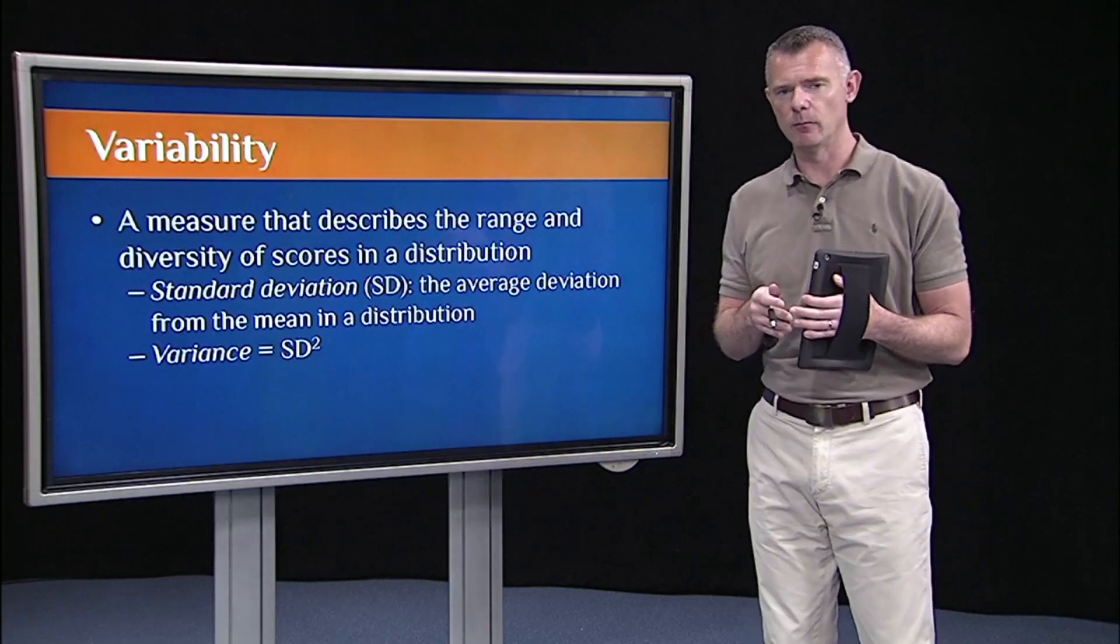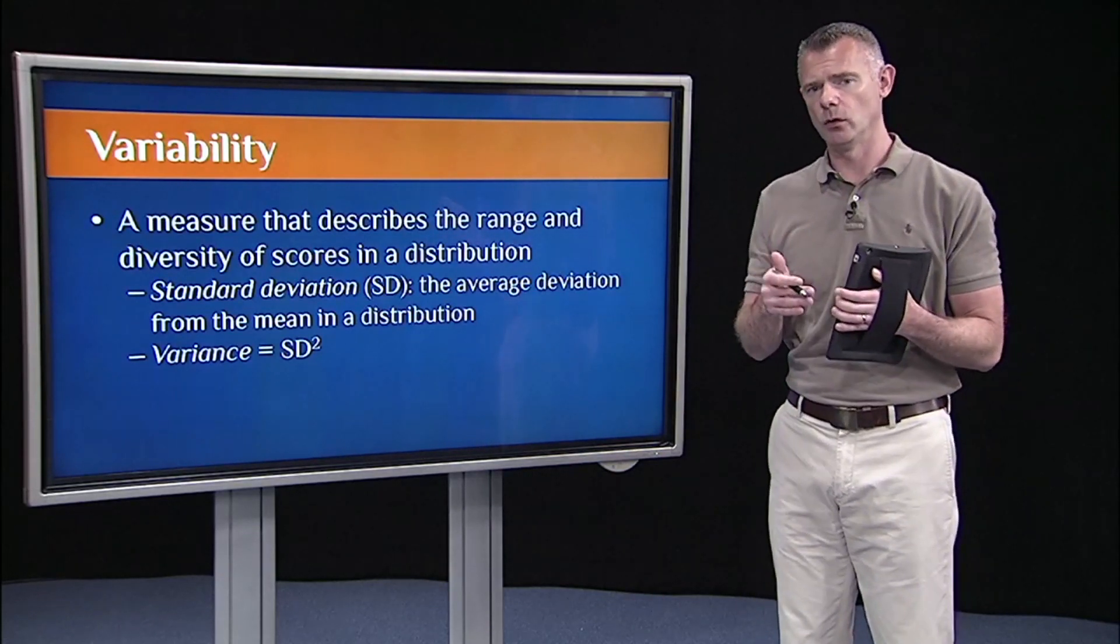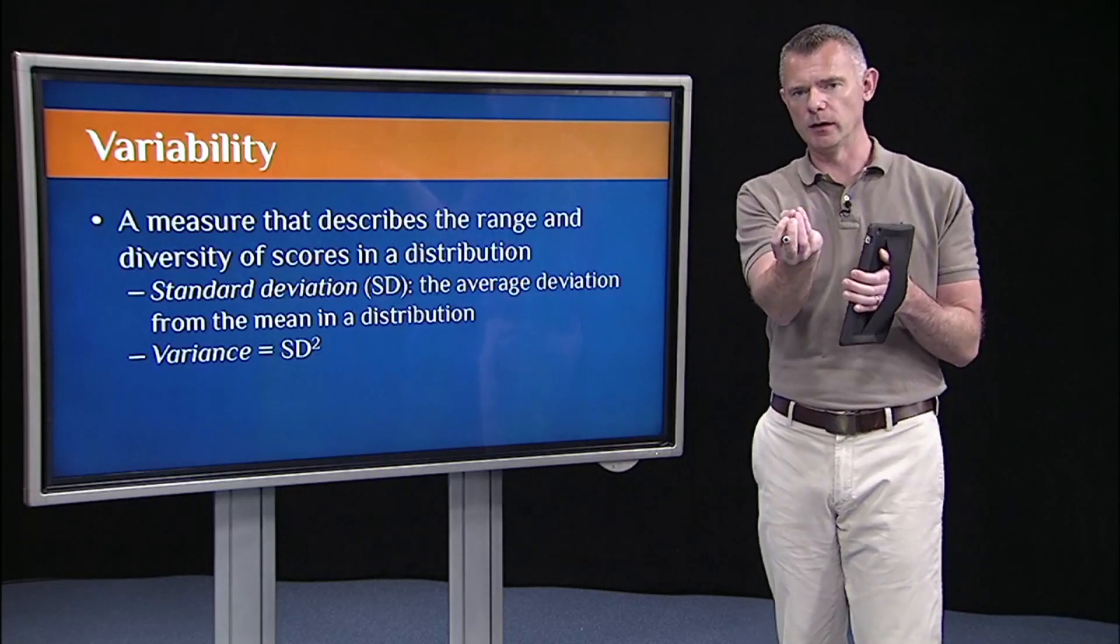In the last segment we talked about measures of central tendency, like the mean, the median, or the mode. What those measures do is they try to capture the center point of a distribution.